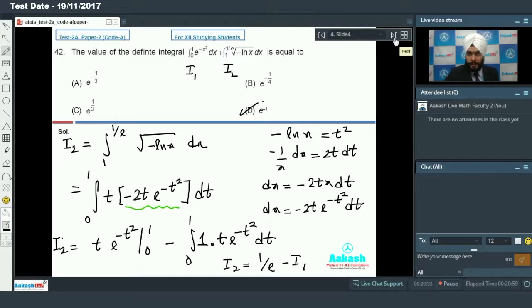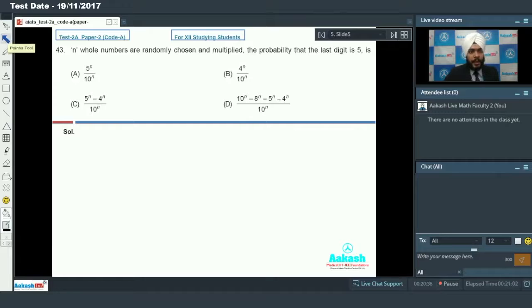Let us move on to question number 43. N whole numbers are randomly chosen and multiplied. The probability that the last digit is 5. Now, the last digit of a product is 5. What are the possible cases? If I have a single even number, then my last digit cannot be 5. That means which numbers should I have at the end? Odd numbers. And how many odd numbers are there? 1, 3, 5, 7, and 9.